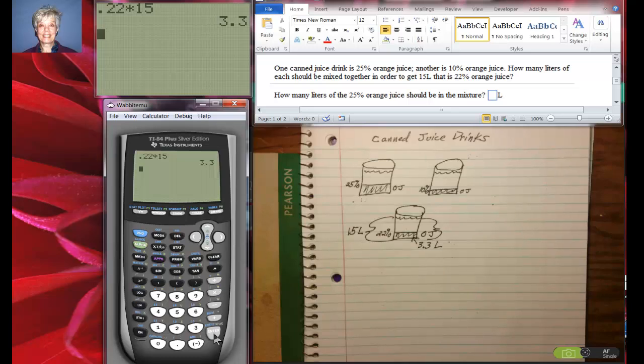Okay, so what we're being asked to do is the second sentence. How many liters of each, that is of that and that, how many liters of each should be mixed together in order to get 15 liters of the 22% OJ mix?